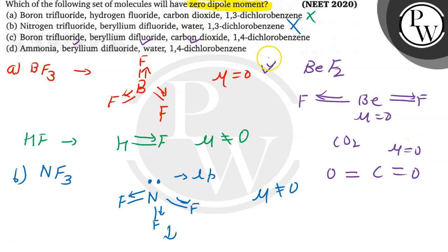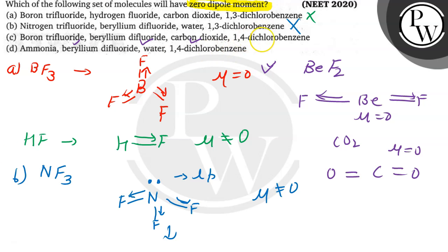Next we have 1,4-dichlorobenzene. If I draw its structure, it will be 1,4-Cl, means Cl here and here. So the net dipole moment will be like this and like this, means the net dipole moment will again be zero.